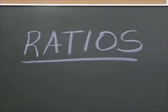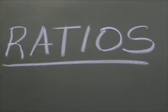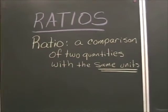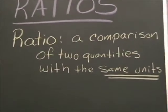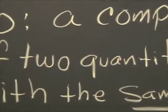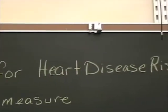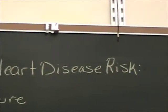In a ratio, we're comparing two quantities, and their units must be the same. This is called the ratio for heart disease risk, and you find it by measuring around your waist, then measuring around your hips, and comparing.